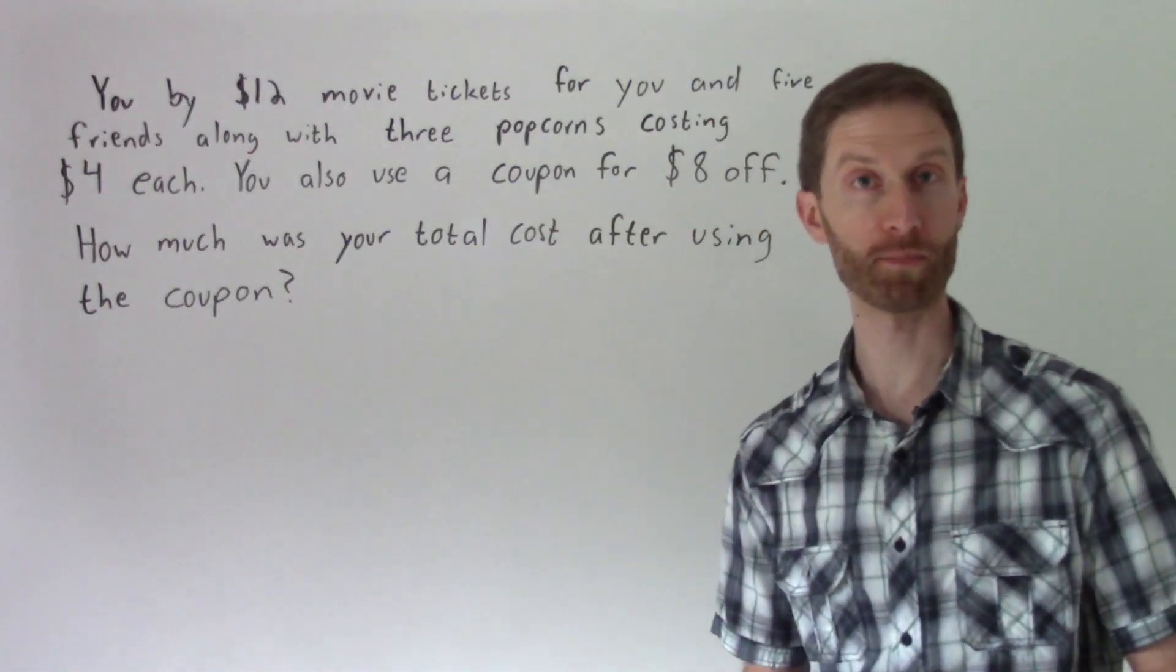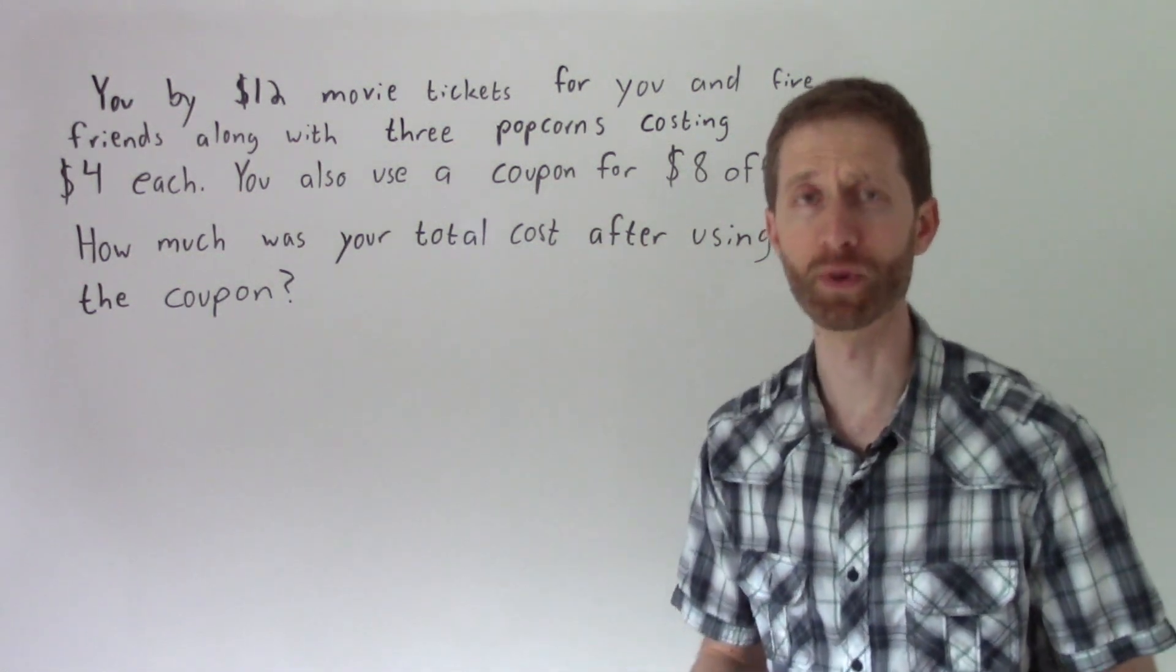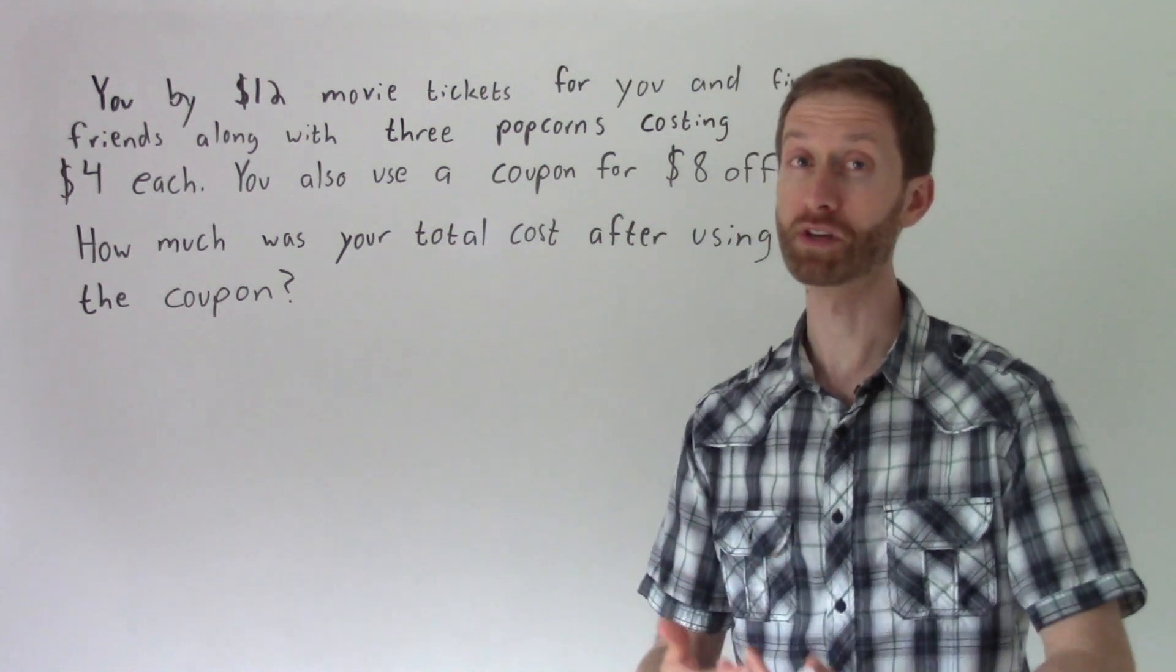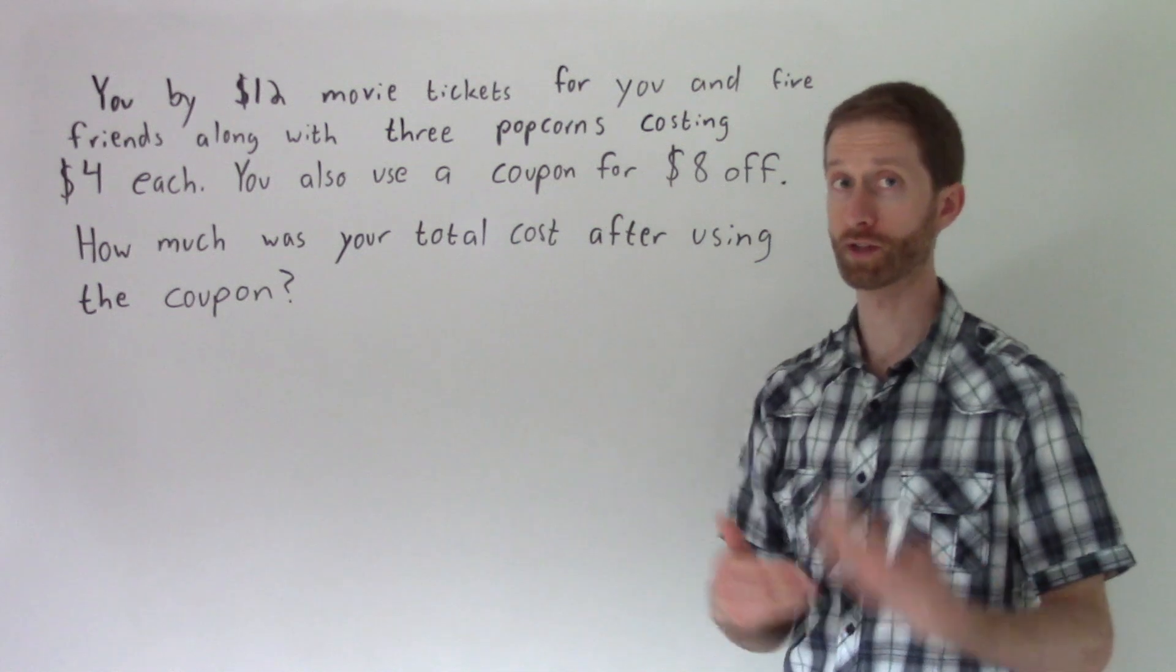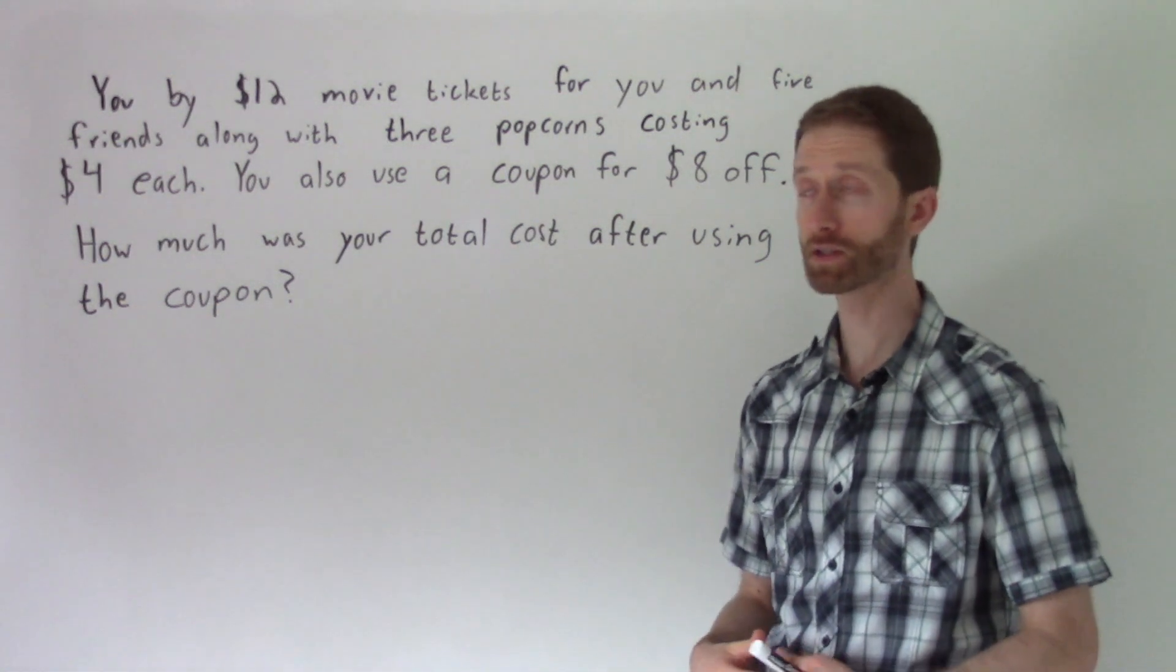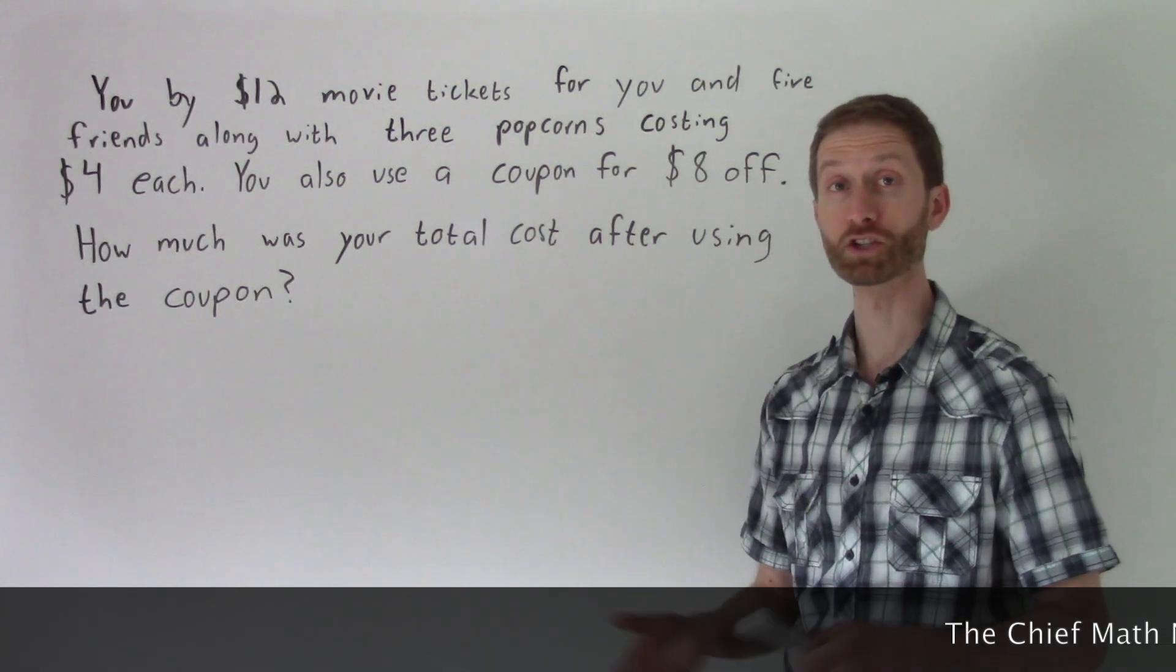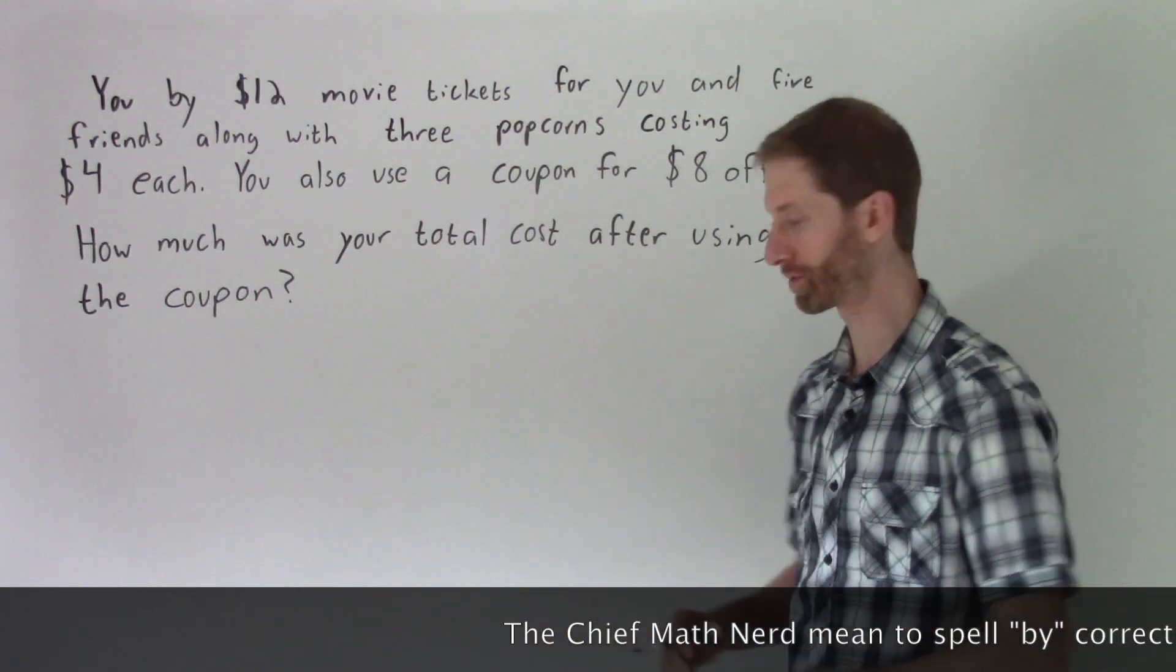And now to round out the order of operations with none other than a word problem. There's lots of words, but we're going to use a technique called translating as you read to figure this one out. Meaning, I don't read the entire word problem and then translate it at the end. I translate as I read the problem into math expressions so that by the time I get to the end of the word problem, I very often can solve what is being asked without having to read this problem several different times.